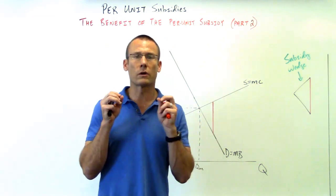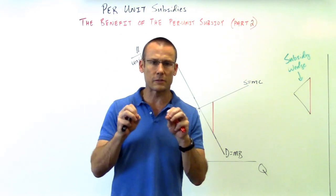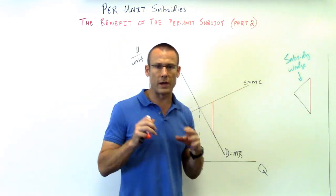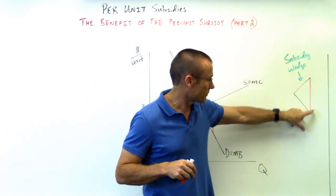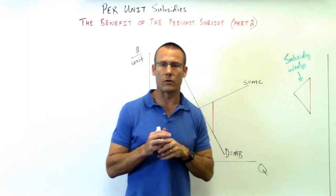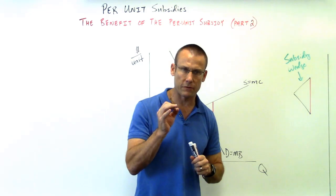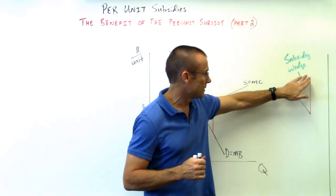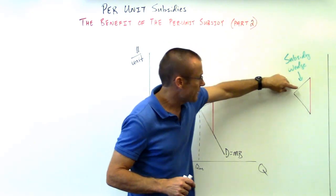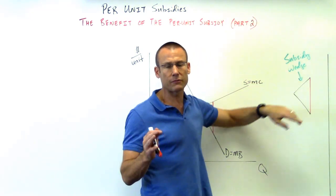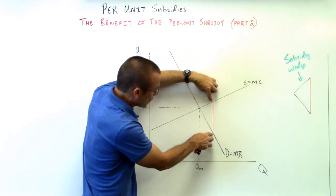We're going to use the wedge to put a ribbon on this so you fully 100% understand it. Here's my subsidy wedge. The important part is that red base — that vertical amount. That base needs to remain perfectly vertical, no slant. That vertical amount is the per unit subsidy — that's key.